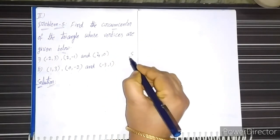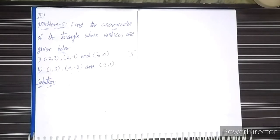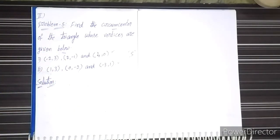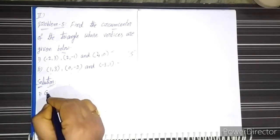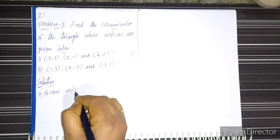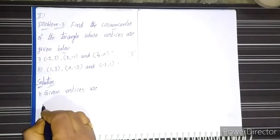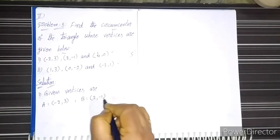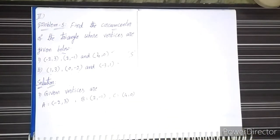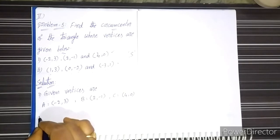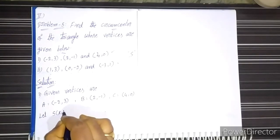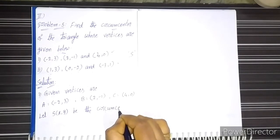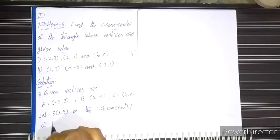In this problem we have to find the circumcenter. Circumcenter is written with a capital letter. For finding this we have the given vertices of a triangle. In problem 5 we also have two sub-problems. Let us solve the first problem. Given vertices of the triangle: A = (-2, 3), B = (2, -1), and C = (4, 0). Let S(x, y) be the circumcenter of the triangle.